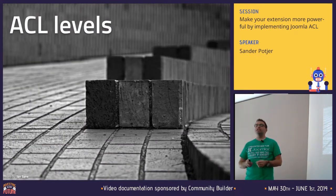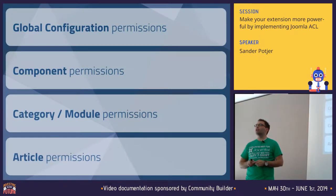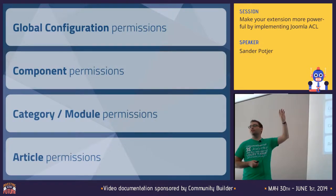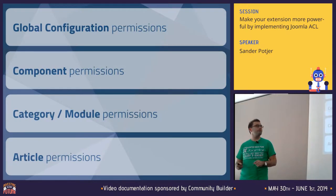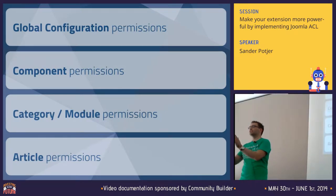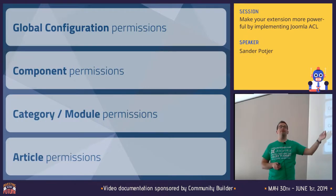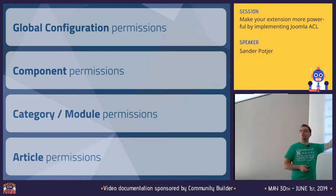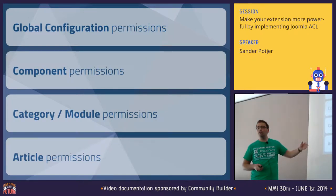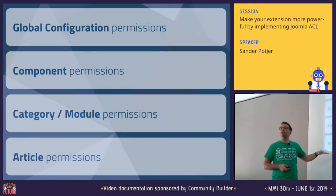Another important thing to keep in mind is that there are some levels in Joomla — I generally talk about four levels. On top we have the global configuration, where you can configure permissions for the entire website. A level below that we have the component permissions — each component has their own set of permissions. Depending on the component, you might have, for example for the article manager, category permissions. For the module manager, you can set permissions per module. And depending on the component, you might be able to set permissions even at the article level.